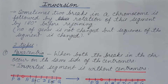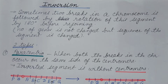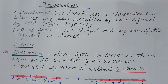Hello everyone. We have already discussed chromosomal aberration in the last video. This is the change in the structure of the chromosome. We also discussed that there are four types of chromosomal aberration: deletion, duplication, inversion, and translocation. Among them, deletion and duplication we have already discussed in detail.